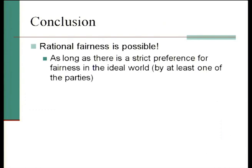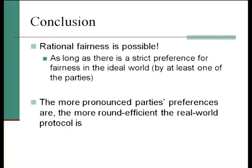This shows that rational fairness is indeed possible, as long as there is a strict preference for fairness in the ideal world by at least one of the parties. As noted in the paper, we don't actually need a full strict Nash equilibrium in the ideal world — we just need that one of the parties has an incentive to use the trusted third party, and that's good enough. Interestingly, the more pronounced the parties' preferences are, the more round-efficient the real-world protocol is — the protocol can only be inefficient in cases where we don't care about having it in the first place.